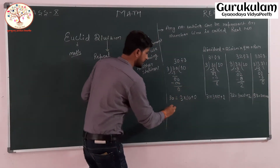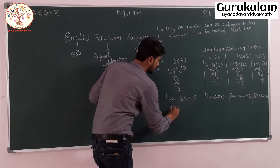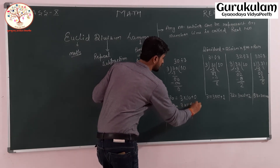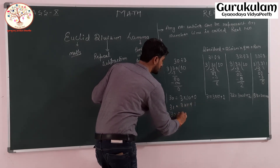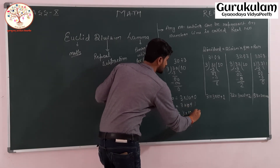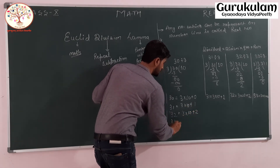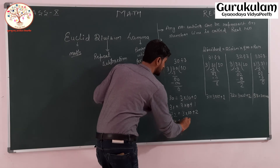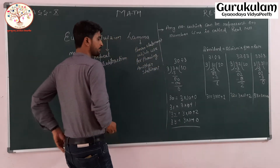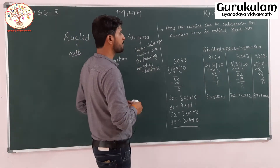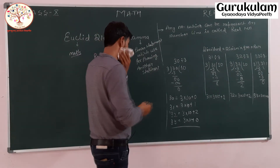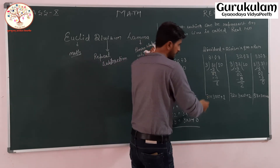So writing this pattern: 30 = 3×10 + 0; 31 = 3×10 + 1; 32 = 3×10 + 2; 33 = 3×11 + 0. This is the simple division done according to the given numbers.